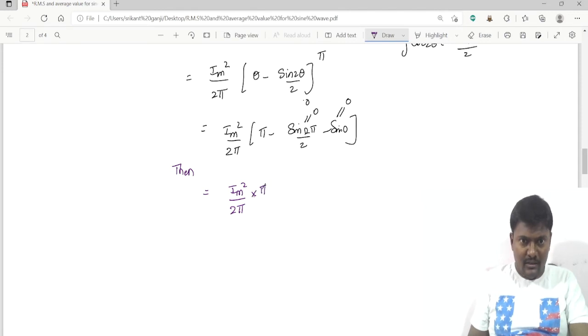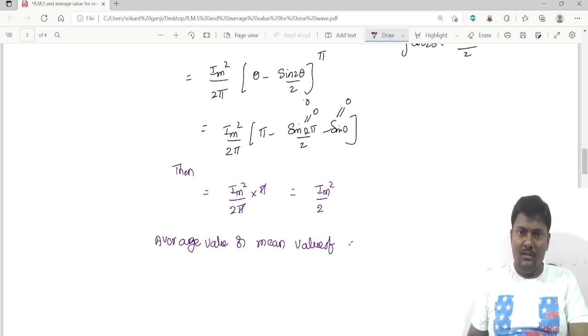Then this is I_m square by 2π into π. So π π will be cancelled, I_m square divided by 2. The average value or mean value of square of current is equal to I_m square by 2.